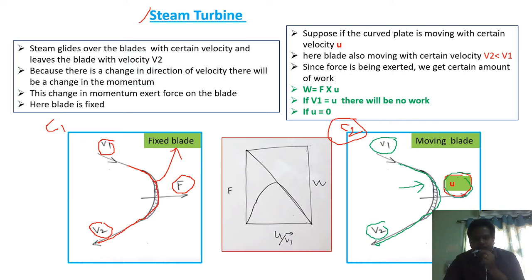The total work equals force F times blade velocity U. The conditions are: if V1 equals U, there will be no work, because if both are equal there will be no work.